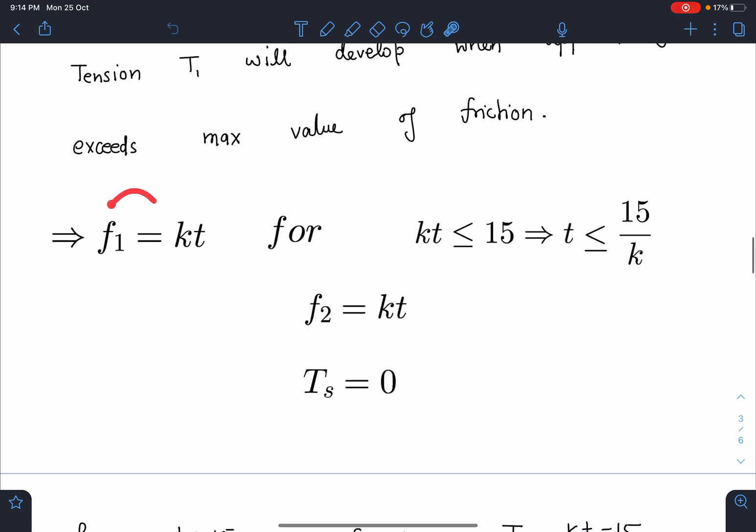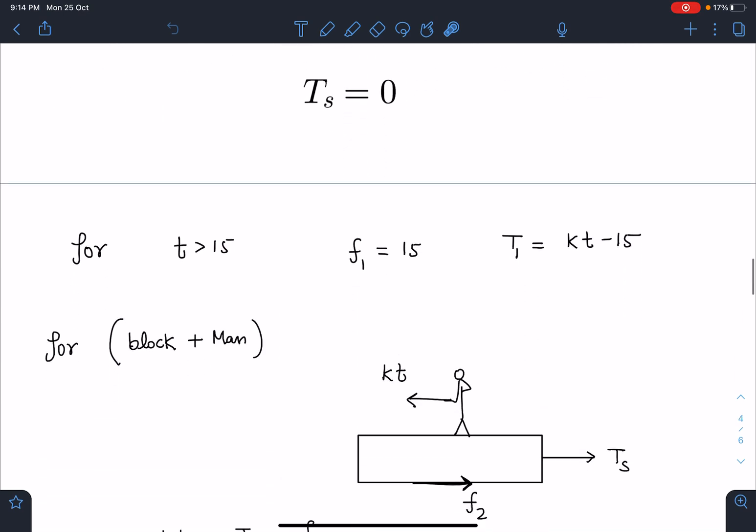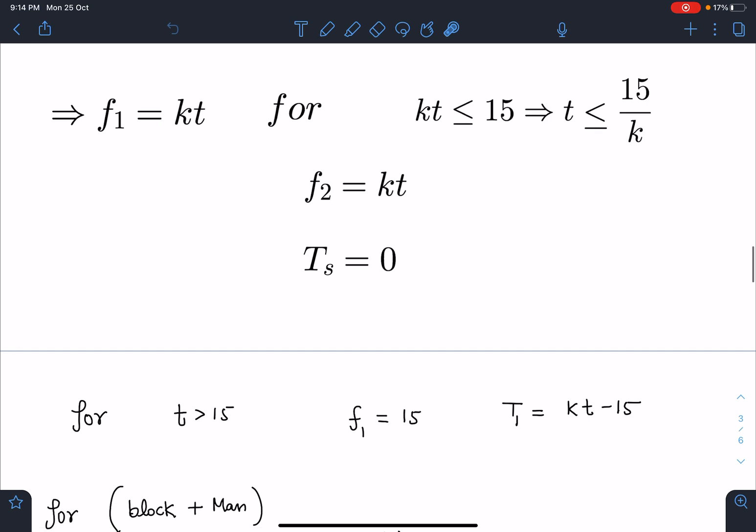So directly we can say F1 is kt, F2 is also kt and tension in the string, outer string is going to be 0. Now for t greater than 15/k, I am talking about this time interval.